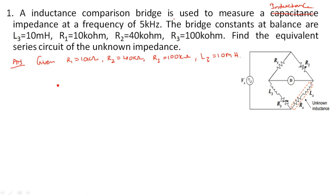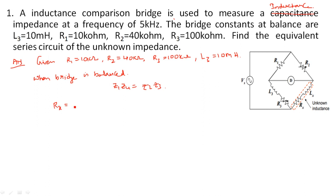We calculate the unknown impedance when the bridge is balanced. The condition is Z1·Z4 = Z2·Z3. The formula for unknown resistance is the same: Rx = (R2·R3) / R1. Substituting: R2 = 40 kΩ, R3 = 100 kΩ, R1 = 10 kΩ. The kilo units and zeros cancel, giving Rx = 400 kΩ.